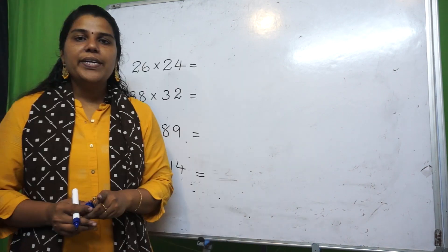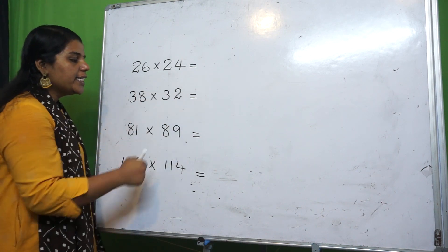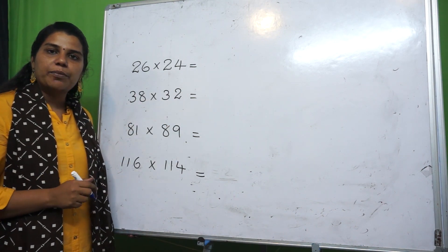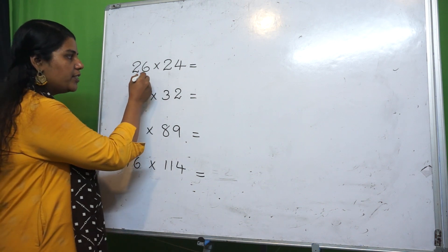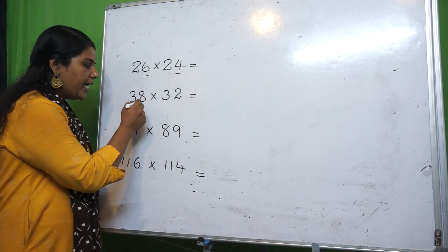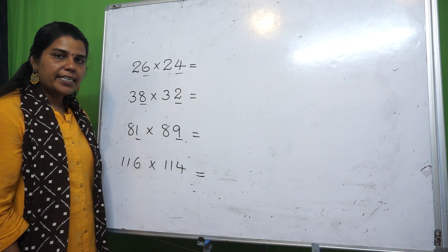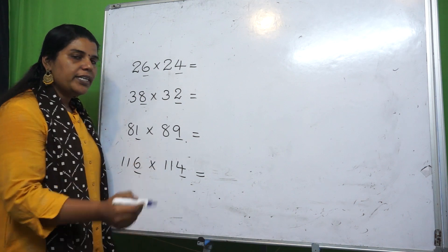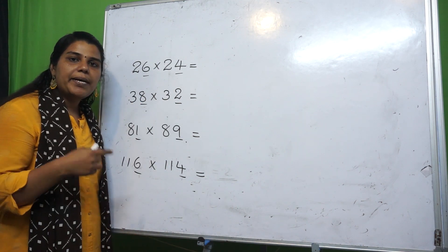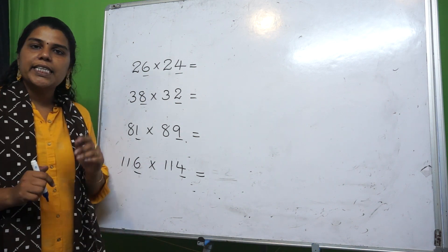Let's say, first of all, if you look at the ones position, the digits add up to 10. For example: 6 and 4 is 10, 8 plus 2 is 10, 1 plus 9 is 10, 6 plus 4 is 10. Once in the ones place, they add up to 10. You can do the rest of the numbers the same way.